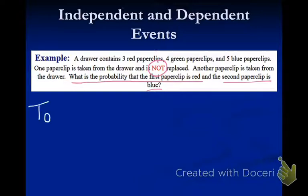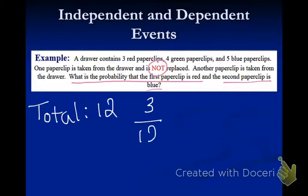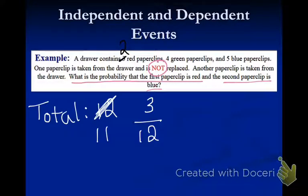The total is still twelve, just like last time — nothing changed. When I first take out that red paperclip, there are twelve paperclips in there, so my probability for red also hasn't changed: three out of twelve. Now I have to think about the probability of blue. I've taken out a red paperclip and not put it back, so that changes two things: there are now two red paperclips, and my total is no longer twelve — it's eleven. So the probability for blue is five out of eleven, because there are still five blue paperclips.